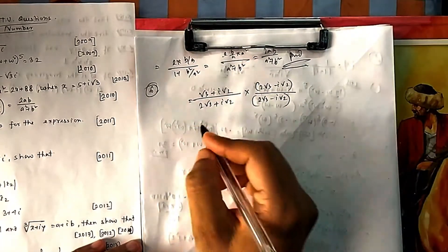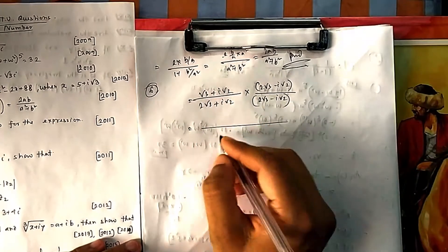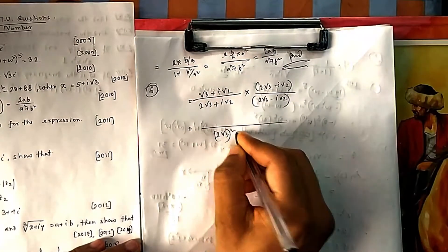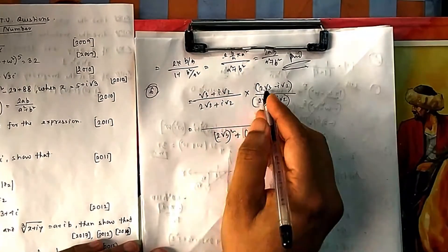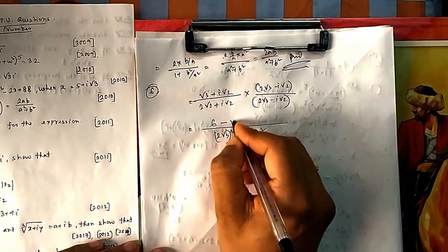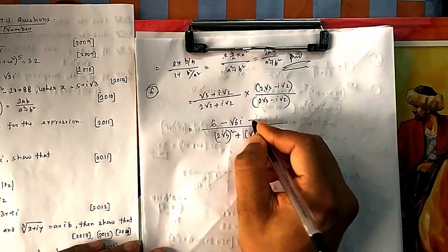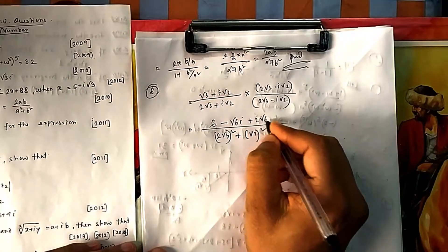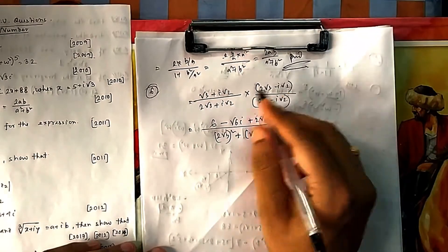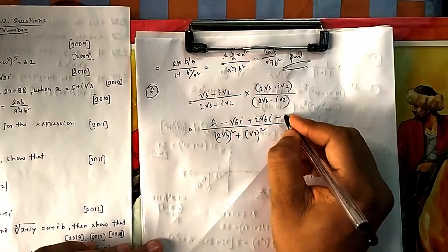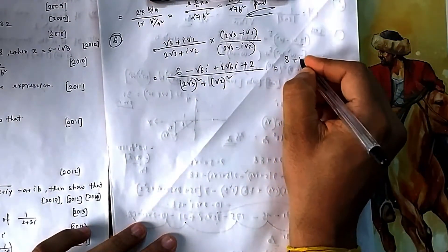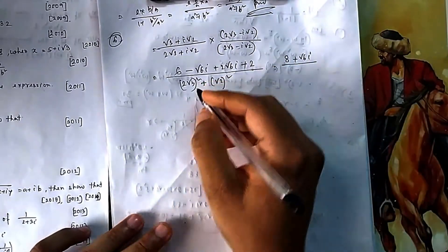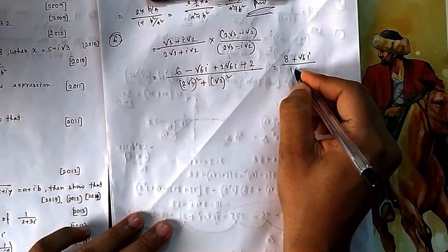The denominator has an i term. When you multiply (a+b)(a−b) you normally get a²−b², but in the case of complex numbers it becomes a²+b², because i×i gives i², which equals −1. Expanding: 2×√3 gives √6; working through the terms we get −√6i + 2√6i − i²·2, and since 2i² gives +2. So simplifying: the numerator becomes 8+√6i, and the denominator: 12+2 = 14.